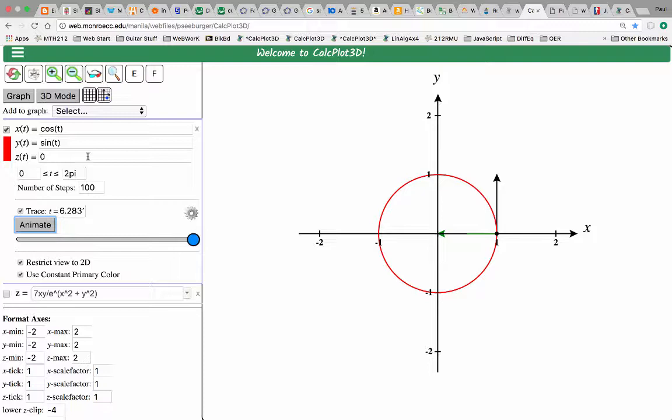Now the fun thing about this demonstration of this app is that you can change things pretty easily and experiment. So we could, for example, put in here T cubed. The right button here. T cubed and here, T cubed.